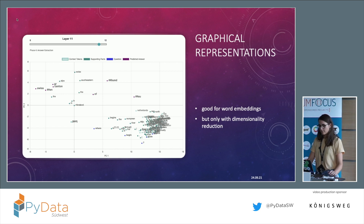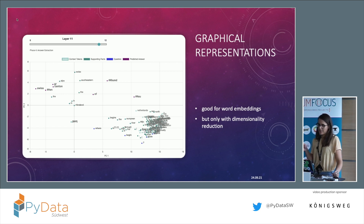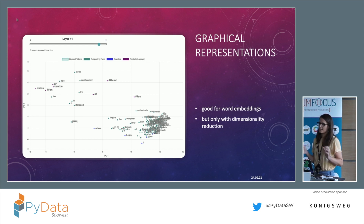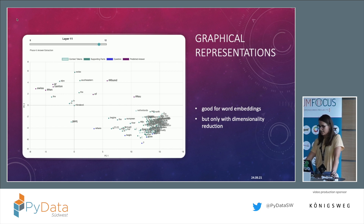One last method is graphical representations. Especially when training word vectors or word embeddings, you can display them on a grid. The downside is you need dimensionality reduction since you can't display them in 2D or 3D directly. I can also recommend an interactive website where you can view how the BERT model answers FAQ questions — you can see each step from layer 1 to layer 12 and how the model moves around words and puts them in correlation. The link will be in the uploaded presentation.